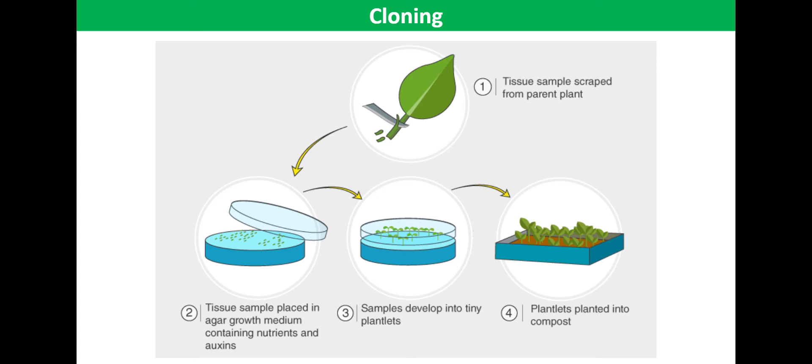The explants are sterilized using dilute bleach or alcohol. This is essential to kill any bacteria and fungi as they would thrive in the conditions supplied to help the plant grow well.